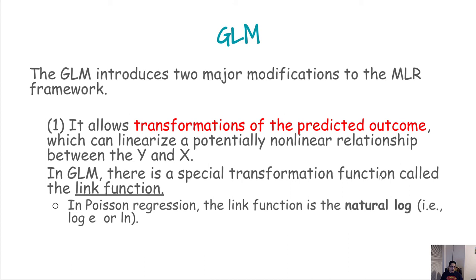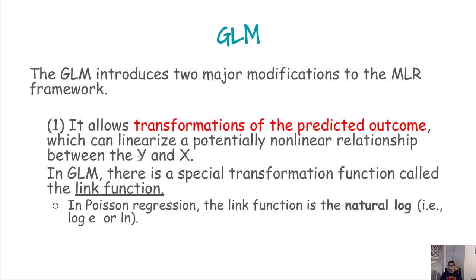The generalized linear model makes two major modifications to multiple linear regression. The first is that it allows transformation of the predicted outcome to linearize potentially non-linear relationships between y and x. If the relationship between x and y is non-linear, we find a function of y that restores a linear relationship between x and that function of y. These functions are called link functions. For Poisson regression, we use the natural log (ln) as the link function — recall that in logistic regression we used the logit link.